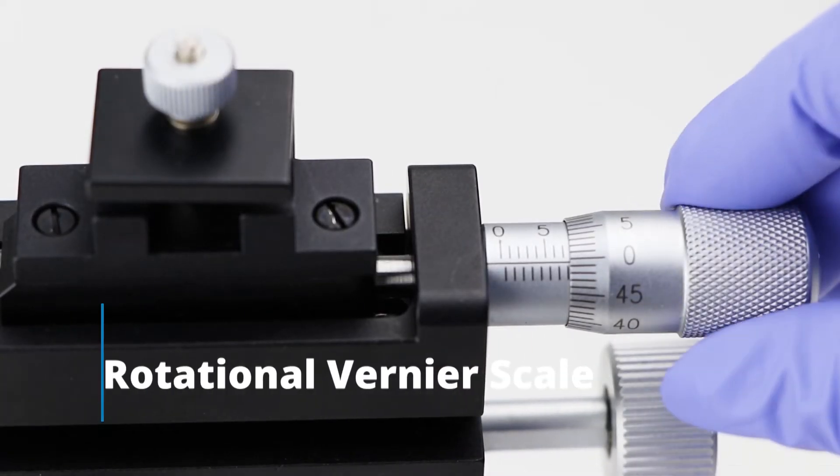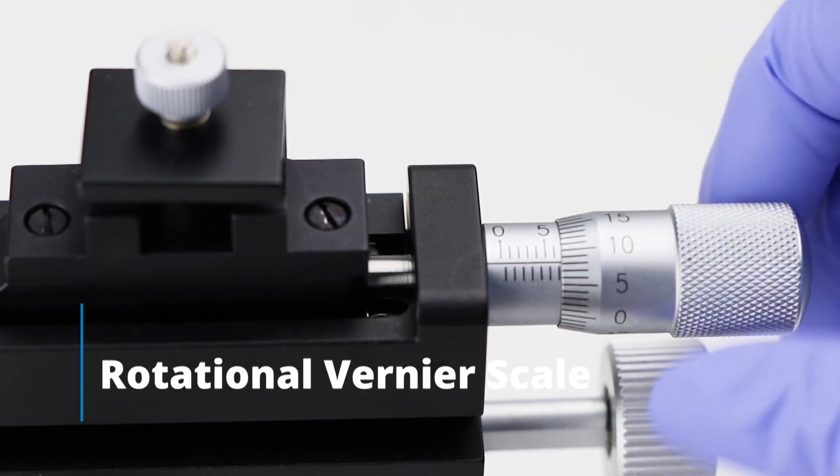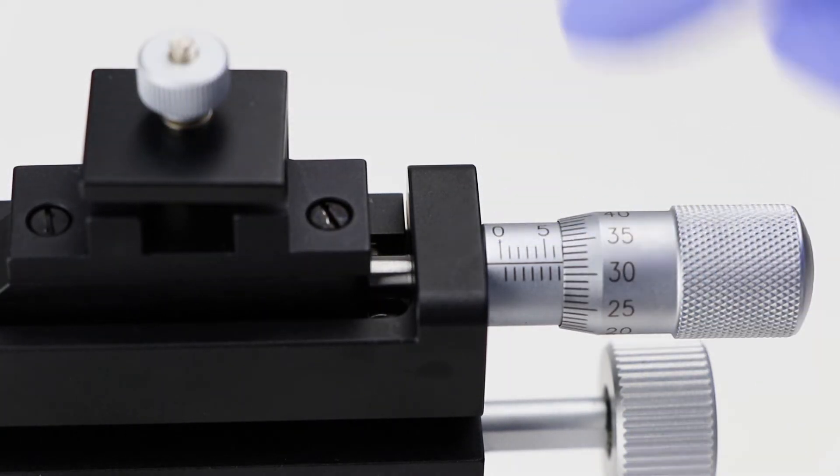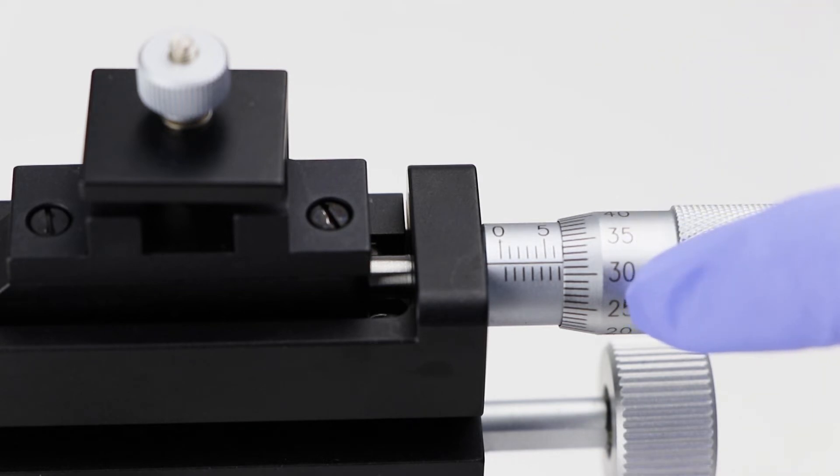On some instruments, the Vernier scale looks like the circular one on my M3301 micromanipulator here. This is the linear scale, and this is the rotational scale.